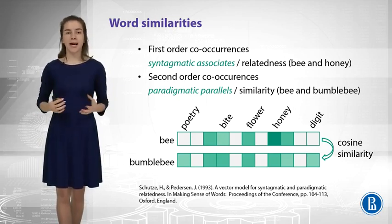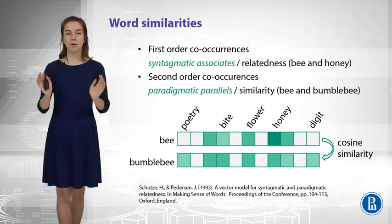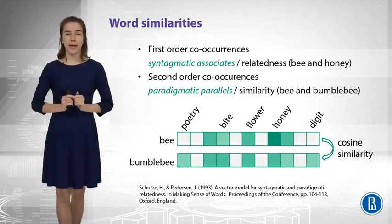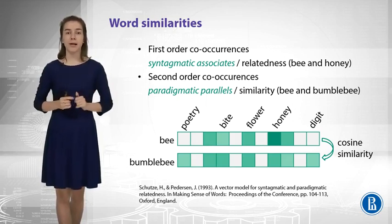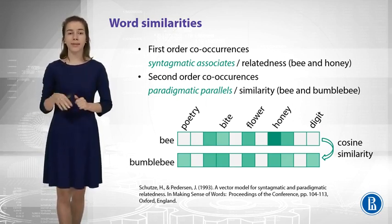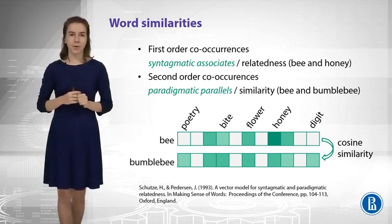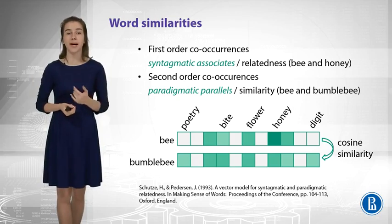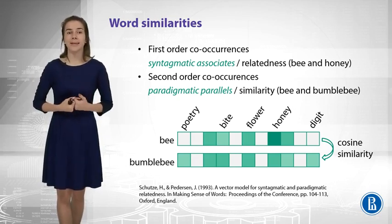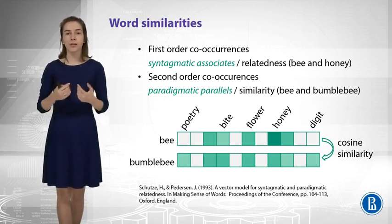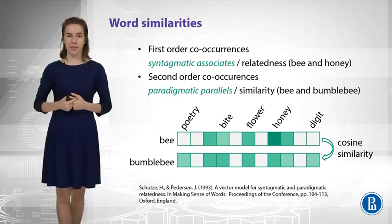We can decide that we are interested in the words that co-occur in a small sliding window — for example, in a window of size 10. If the words co-occur, we say plus 1 for this counter and get these green counters in the slide. This way we will understand that bee and honey are related. They are called syntagmatic associates because they often co-occur together in some contexts.